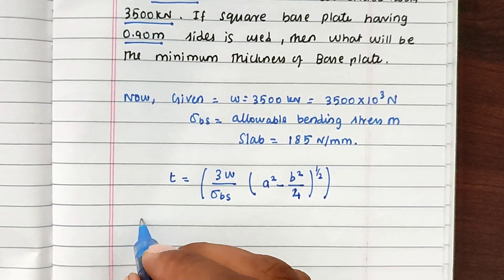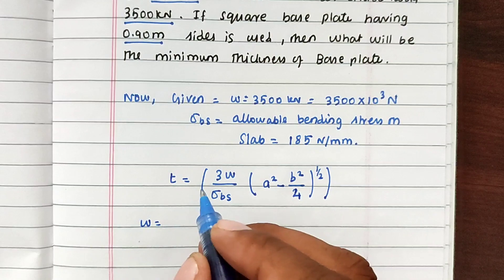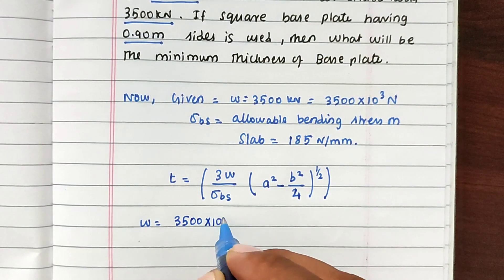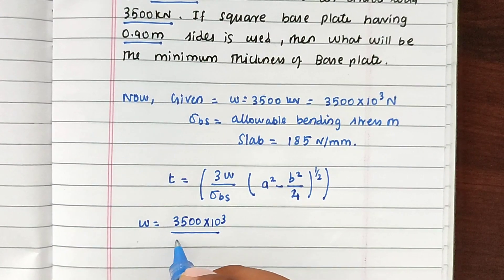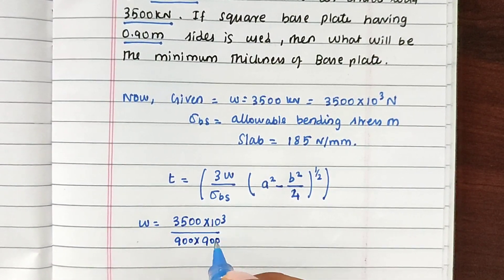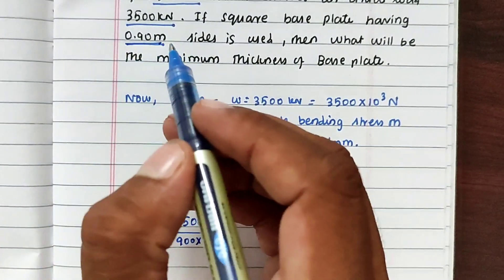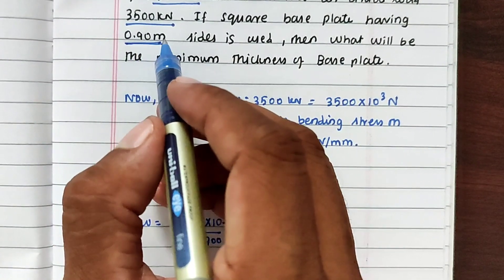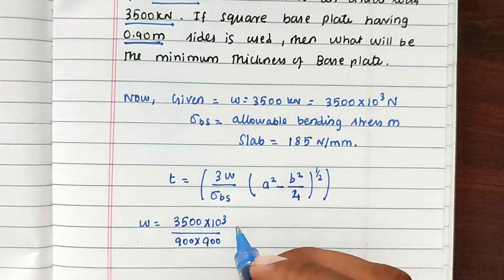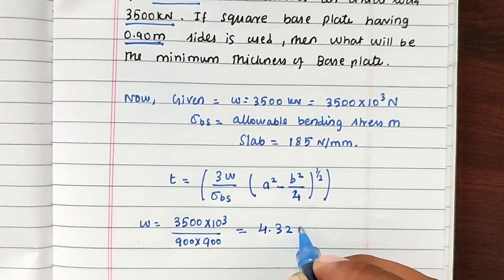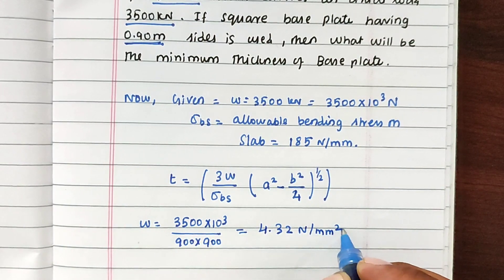From that, W - we have to know the load by area - that is 3500 into 10 power 3 divided by area is 900 into 900, because the base plate is a square plate 0.9 meter, so that is 900 mm. Solving this, we got the value of 4.32 N per mm square.